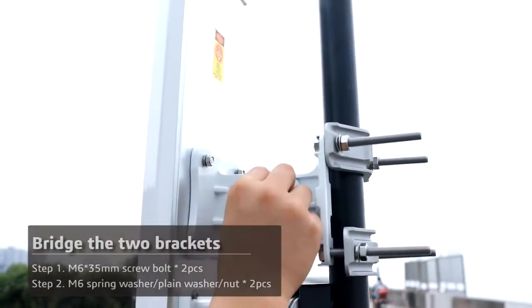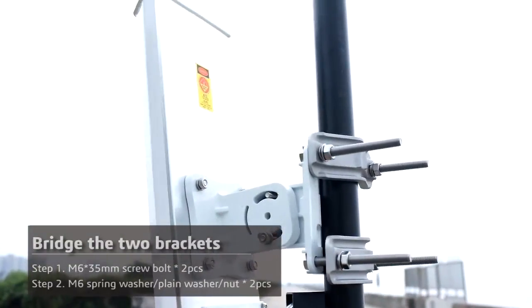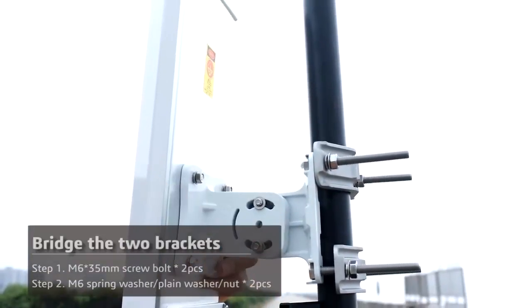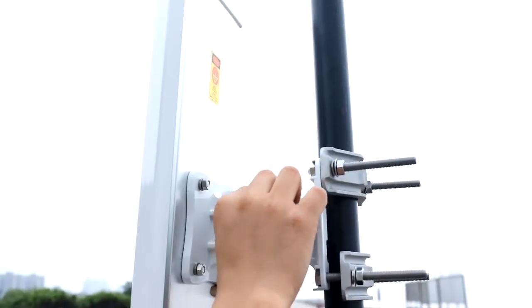If the direction is correct, the hex head should seat into the bracket. Then on the other side of the screw, slide over the M6 spring washer, followed by the plane washer, and then secure it with a screw nut.